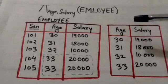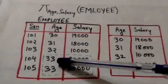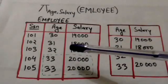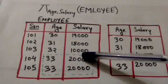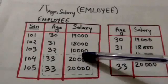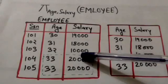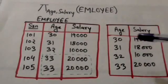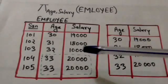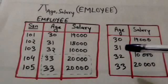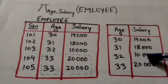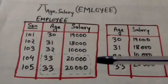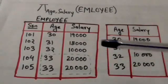Now, see this combination of values of age and salary appears twice in the employee relation. But the result relation contains only one tuple which has this combination of values for its attributes, because duplicate tuples are eliminated.